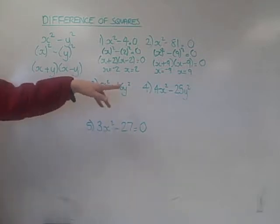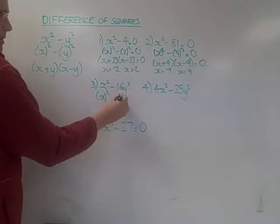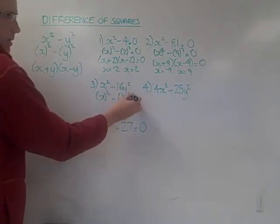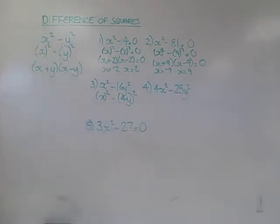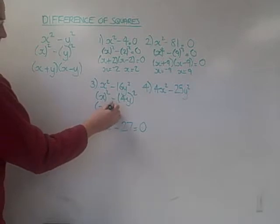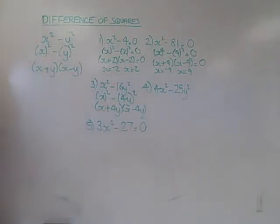This one's just factoring, there's no equal to 0 on this one. Once again, we've got x², and this time 16 has been chosen because that's 4² and y². So 4y times 4y gives me 16y². Once it's in this form, I can say it's (x + 4y)(x - 4y).